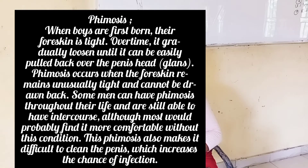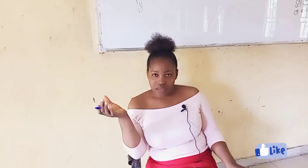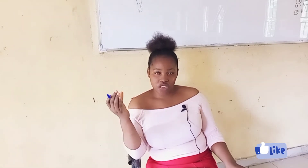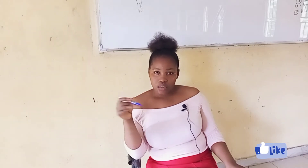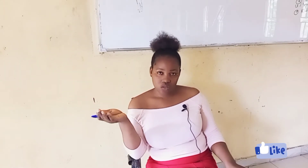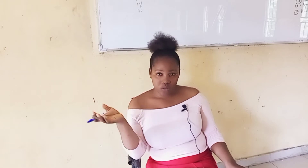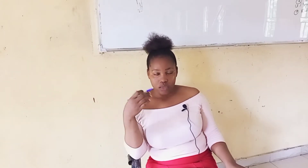Inability to pull back the foreskin also means that it is difficult to clean the penis, which increases the chance of infection. Because the foreskin covers the glans — the head of the penis — it becomes difficult to keep the penis head clean, creating a greater chance of infection. Phimosis does not prevent sexual intercourse, but most people enjoy intercourse more when their foreskin can be pulled back over the penis head.